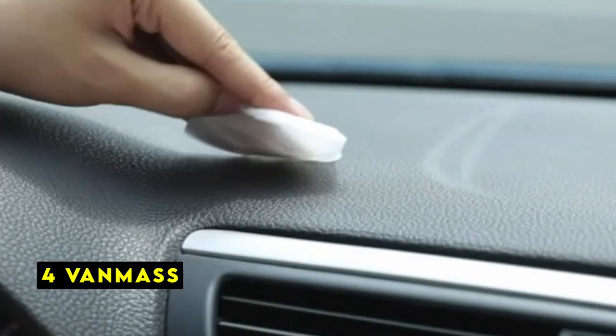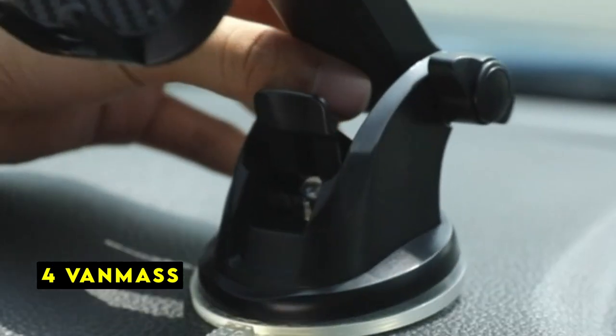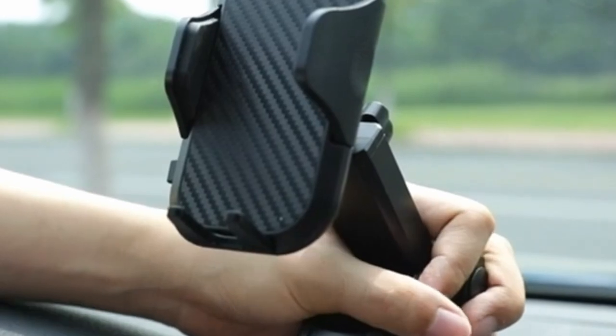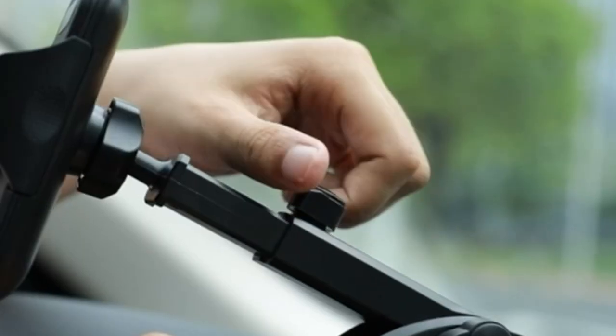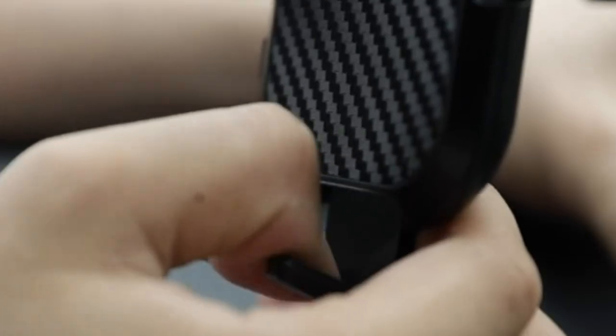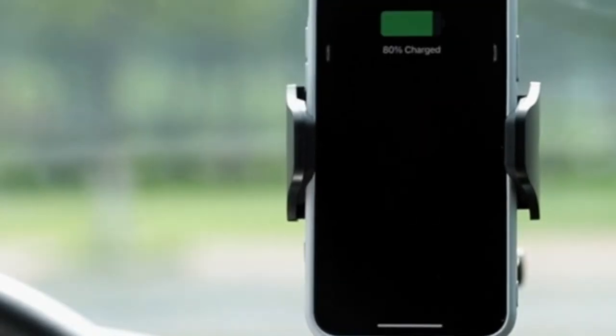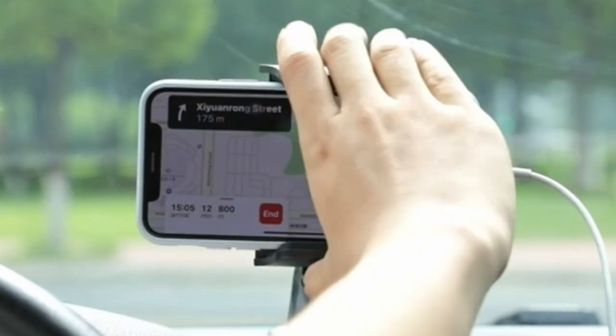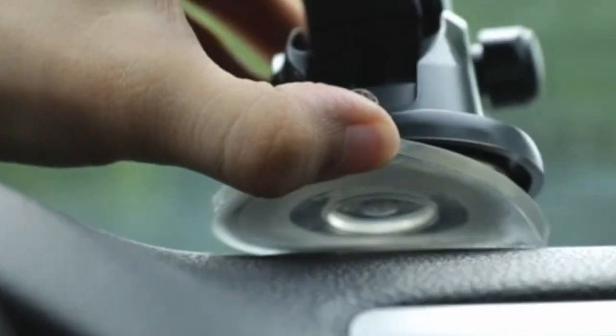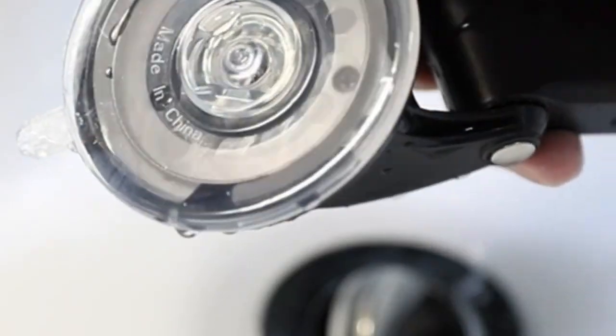At number 4 is Vanmus. The Vanmus car phone mount boasts an impressive 60-pound suction cup, striking the perfect balance between holding power and car safety. The innovative suction cup technology ensures a firm grip without leaving marks or damaging your dashboard, even in extreme weather conditions. This versatility allows for seamless use across different vehicles.